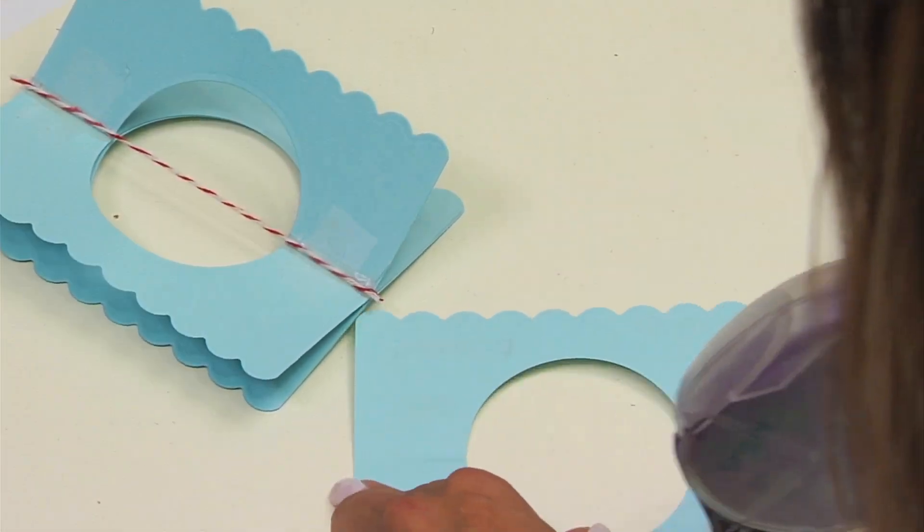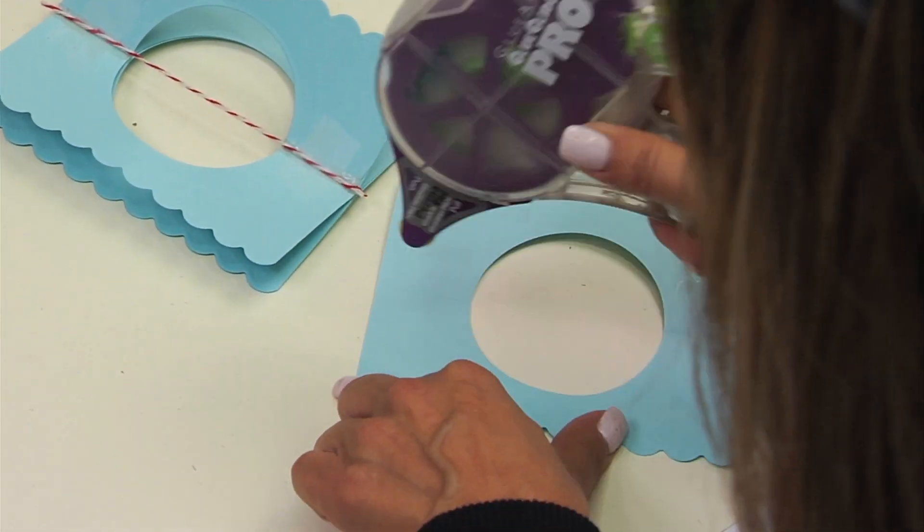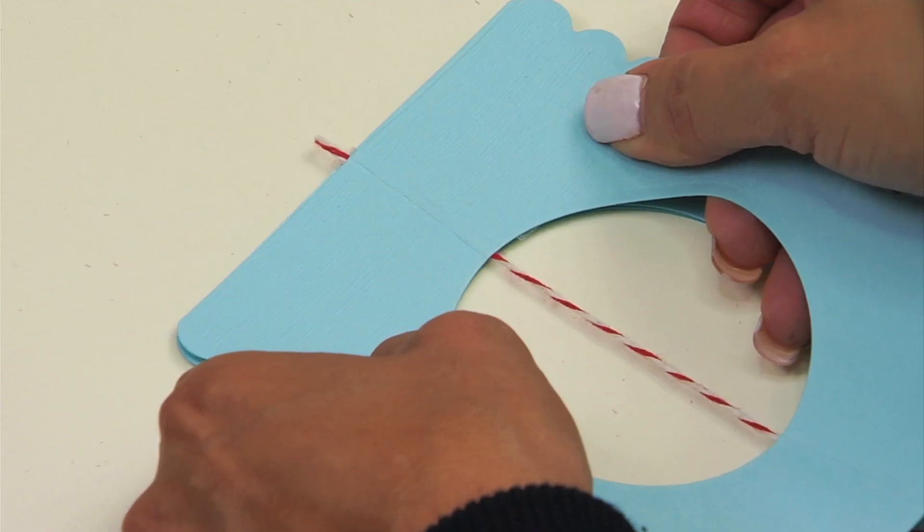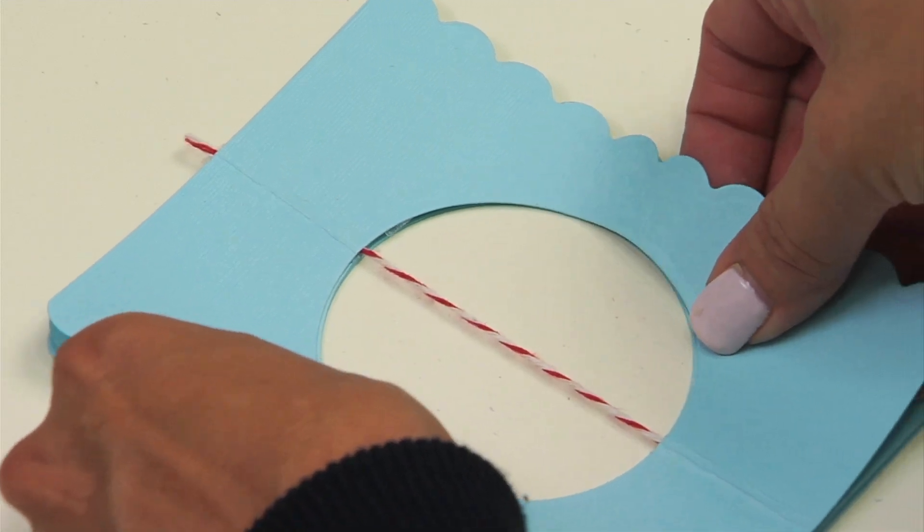Now, we're going to cover the twine with our final card base using adhesive. And we'll go ahead and line that right onto the front, just like that.